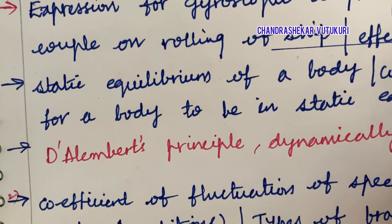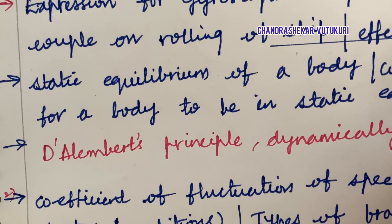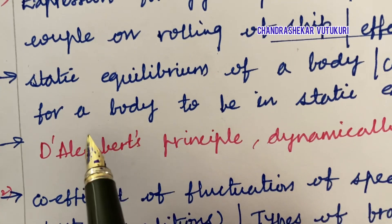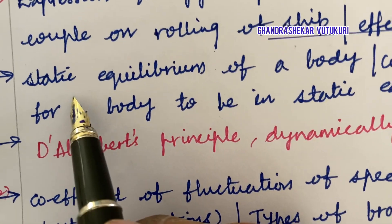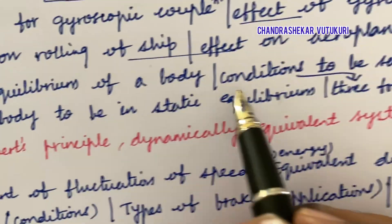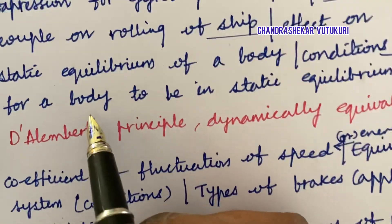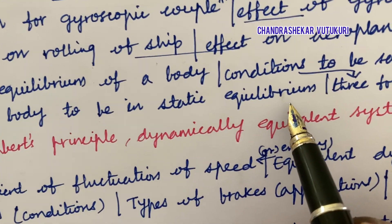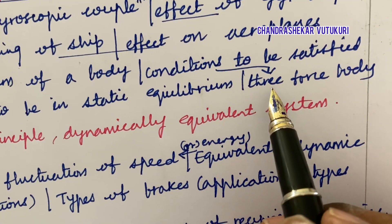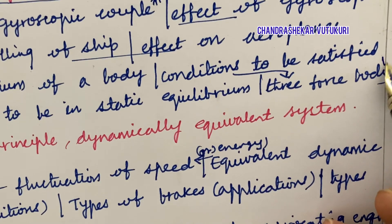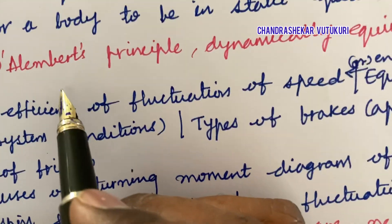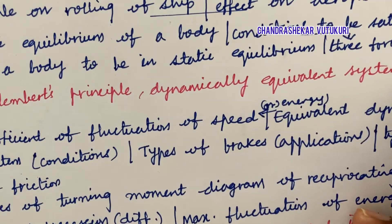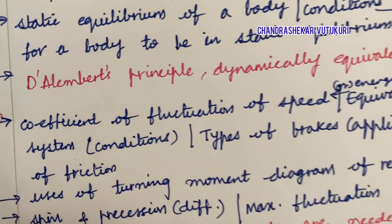I hope you are taking all the short questions together, meaning questions from A to J, written very neatly. Static equilibrium of a body and conditions to be satisfied for a body to be in static equilibrium, as well as the conditions for three-force bodies, are asked several times. D'Alembert's principle and dynamically equivalent system is said to be a top-most question.